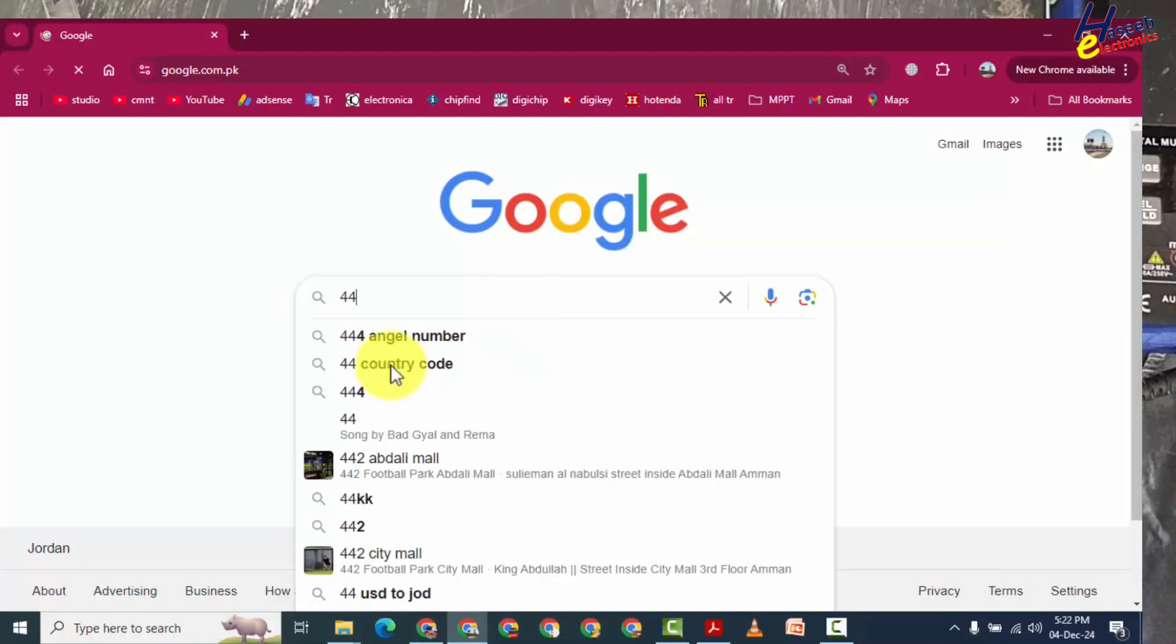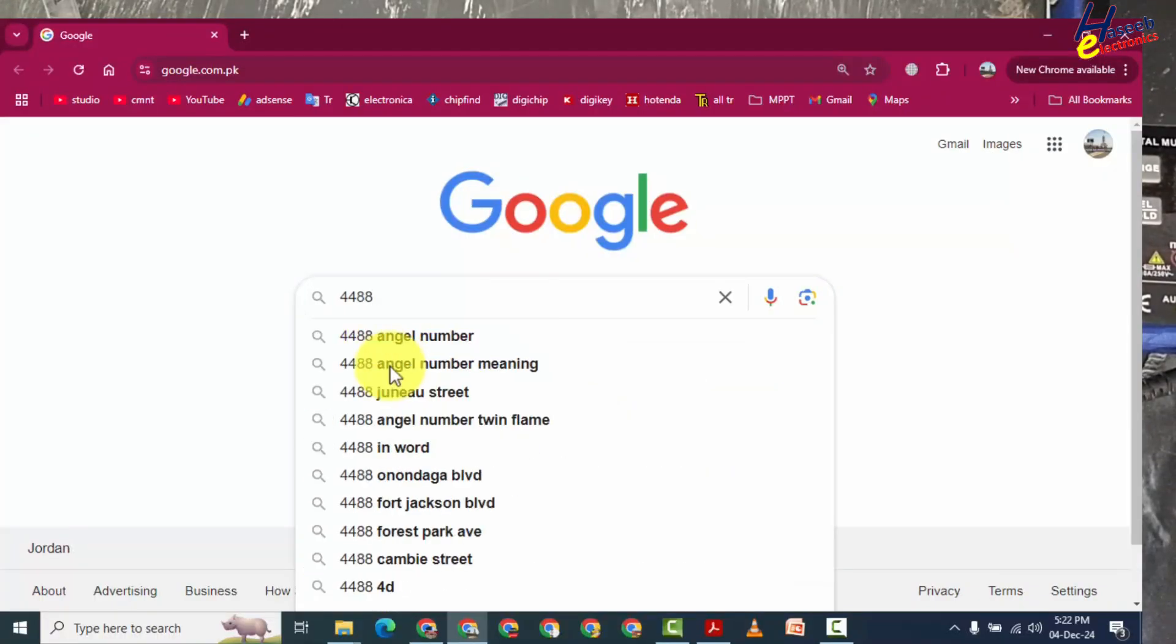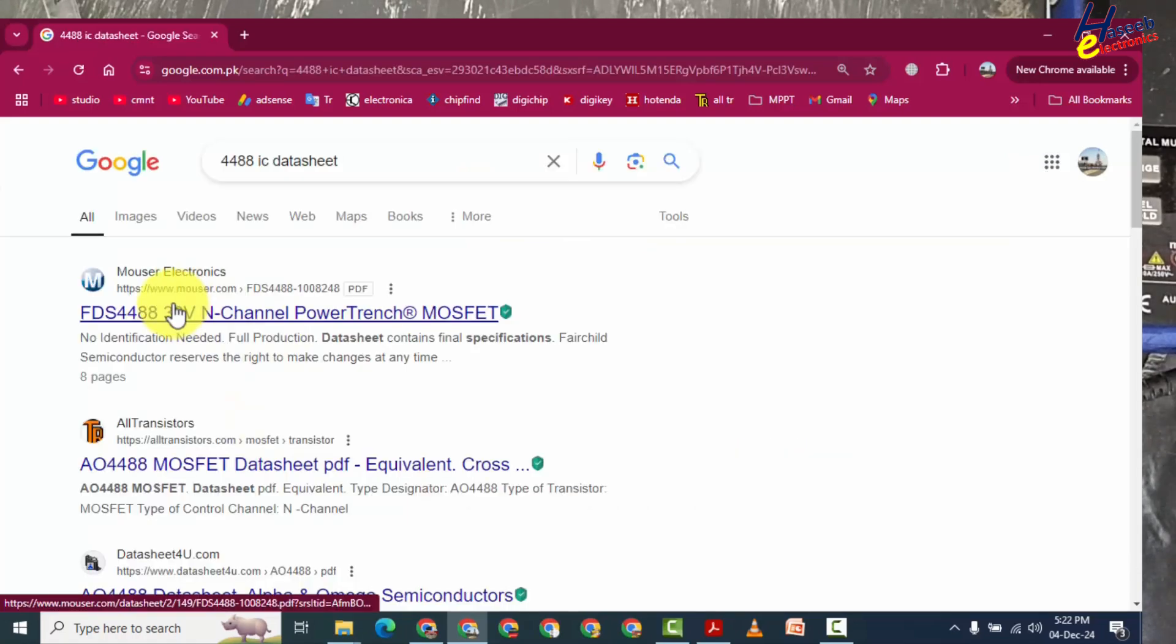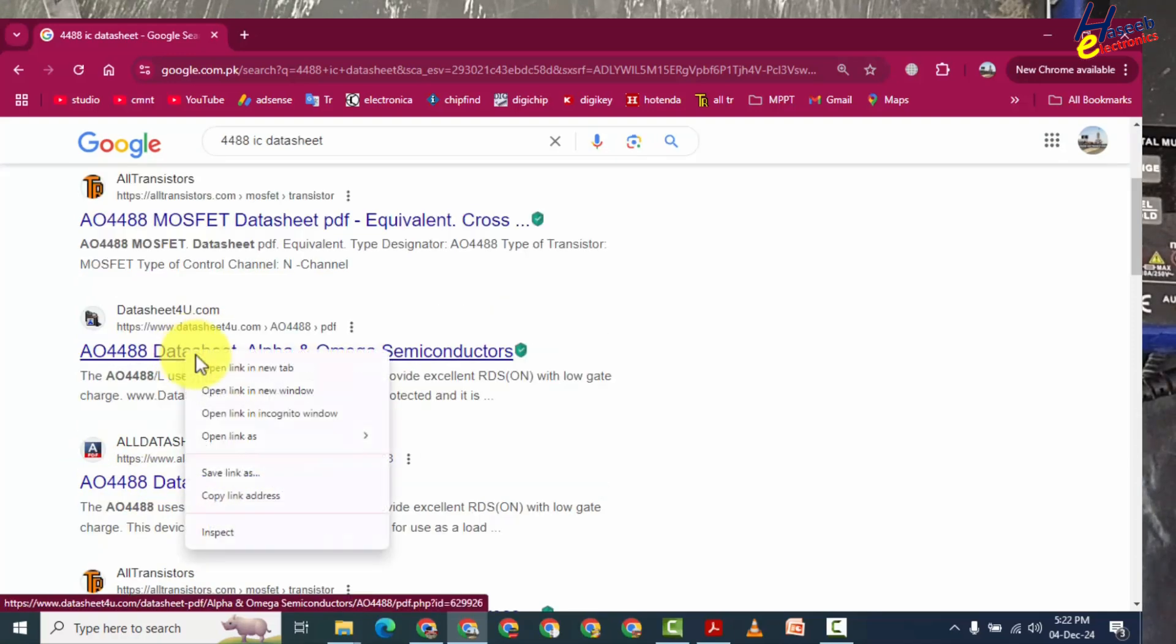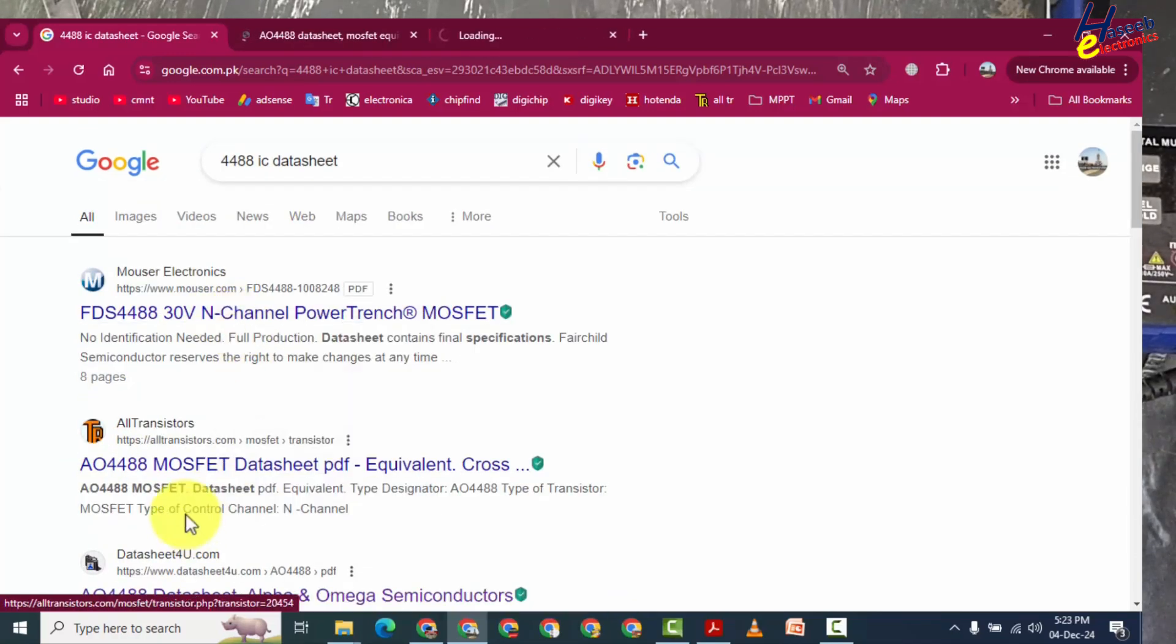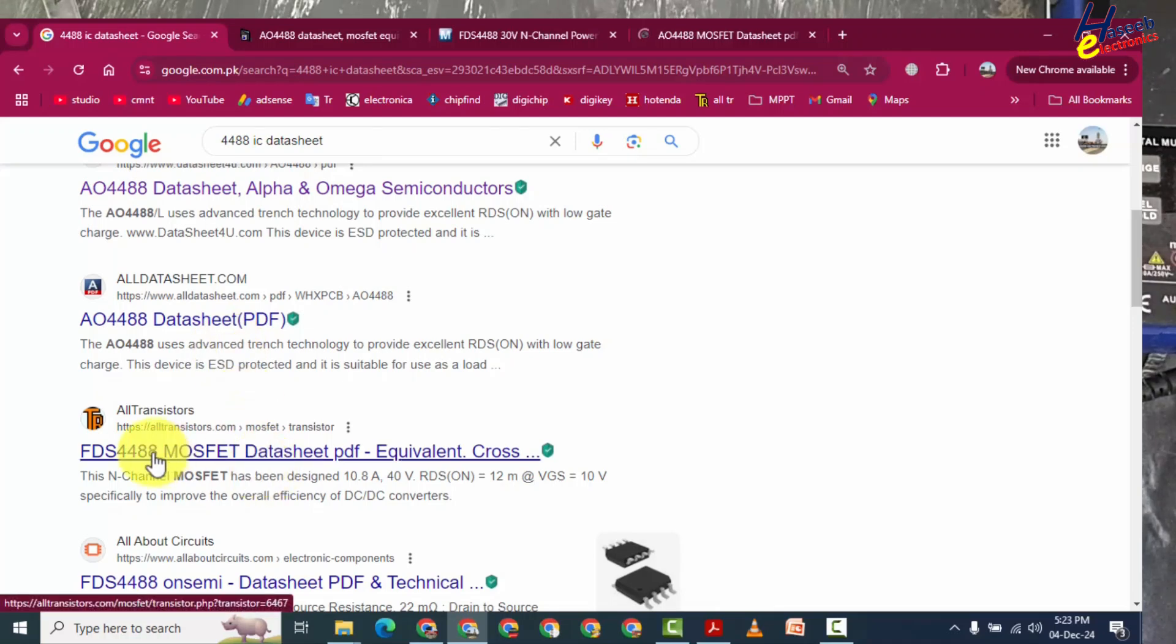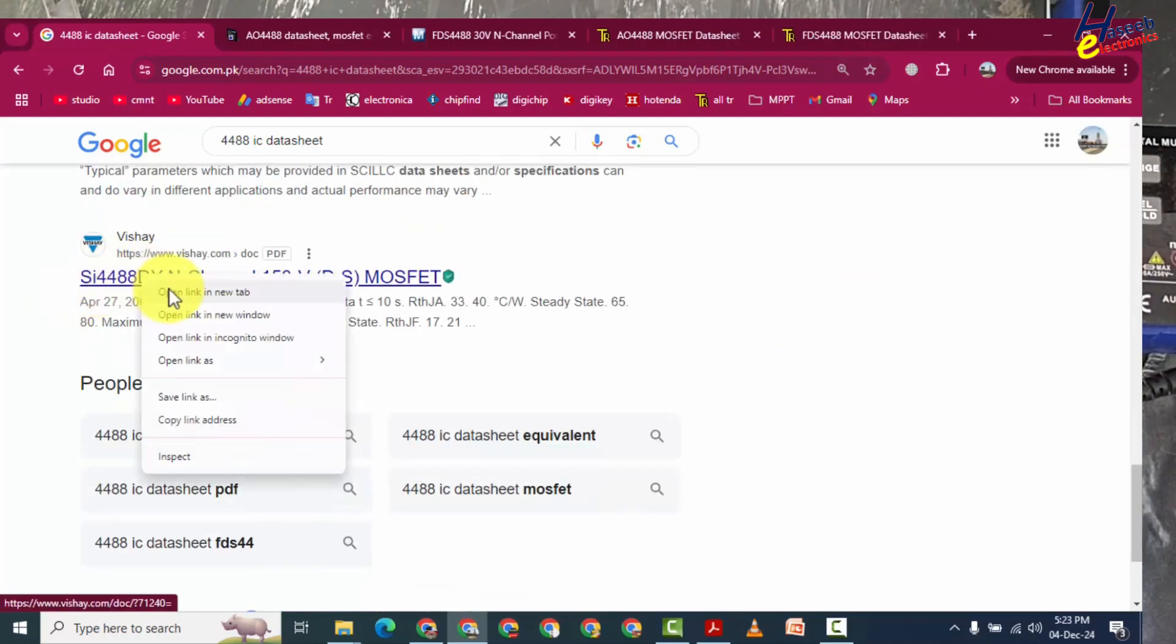IC datasheet. Here is FS double four double eight, 30 volt N-channel power trench MOSFET. AO double four double eight, let's check this one. We will also check this one, different datasheets from different manufacturers: FDS double four double eight, SI double four double eight.